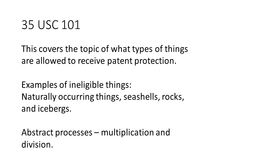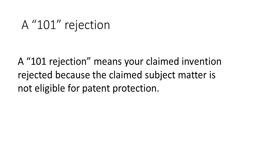Certain things are ineligible for patent protection — they can't be patented. Examples of such things include naturally occurring things like seashells, rocks, and icebergs, as well as abstract processes like multiplication and division.